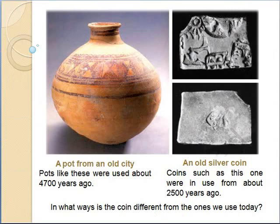In this picture, we can see a pot from an old city. Pots like these were used about 4700 years ago. There are two more pictures — an old silver coin, with both sides shown. Coins such as this one were in use from about 2500 years ago. In what ways is this coin different from the ones we use today?